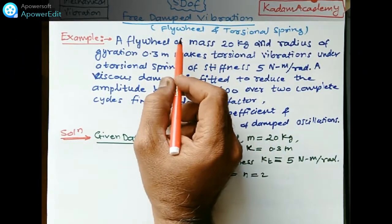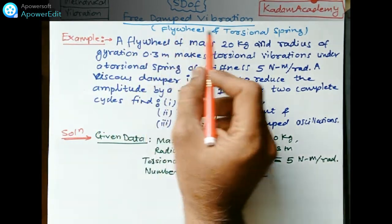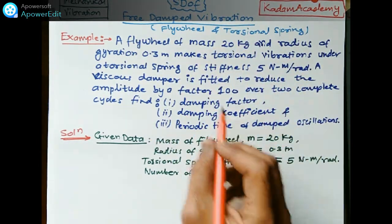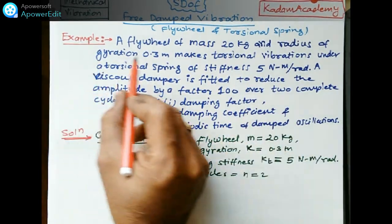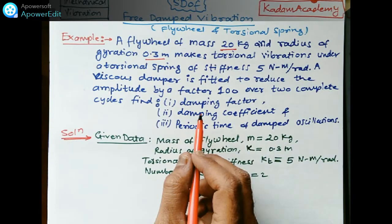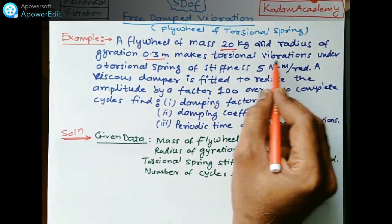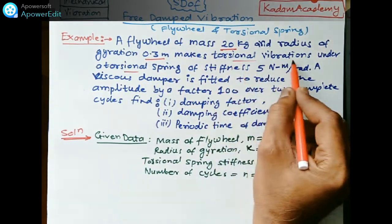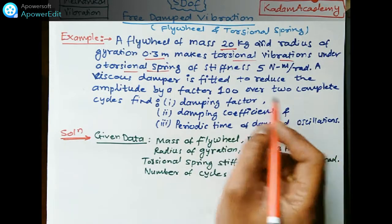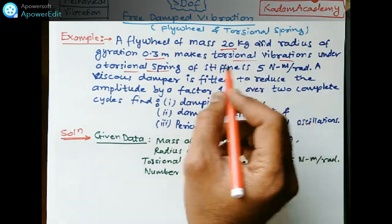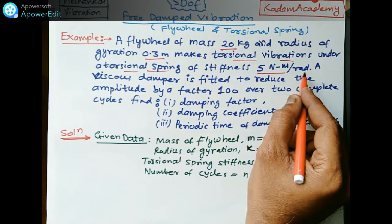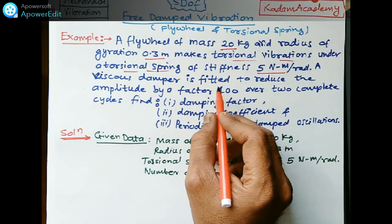Welcome to Katham Academy. This numerical is based on mechanical vibration — free vibration of a flywheel and torsional spring. The flywheel and torsional spring form a single-degree-of-freedom system. The flywheel has a mass of 20 kg and a radius of gyration of 0.3 meter. The torsional spring stiffness is 5 newton-meter per radian.